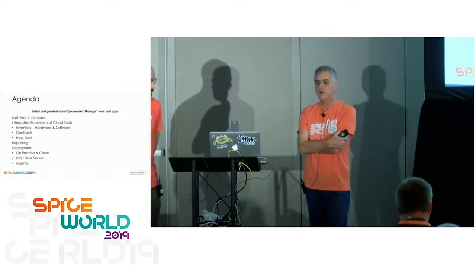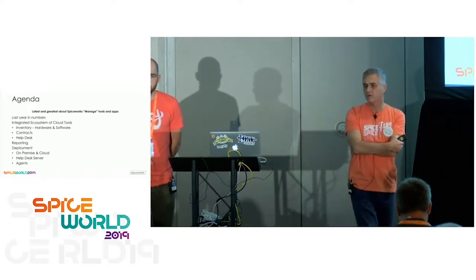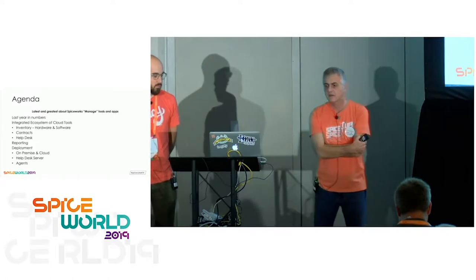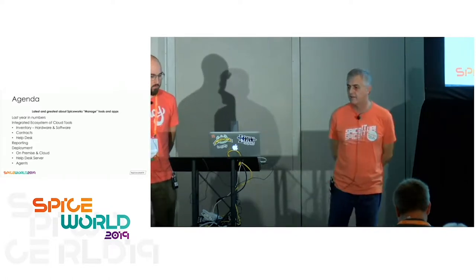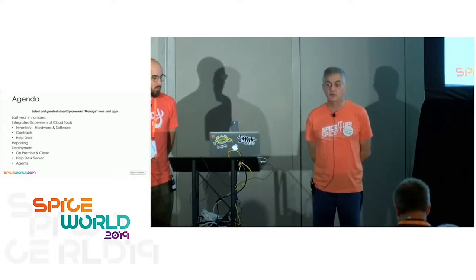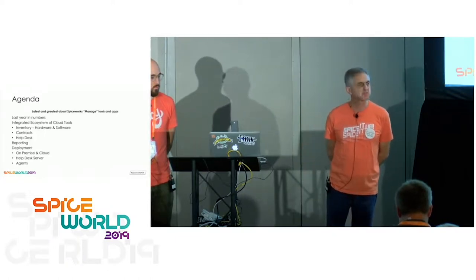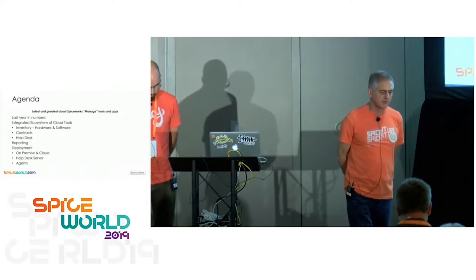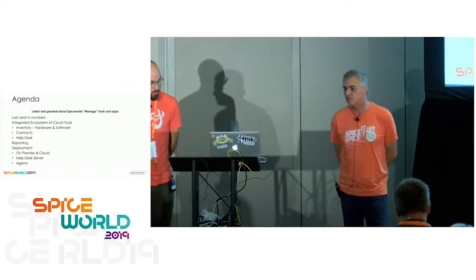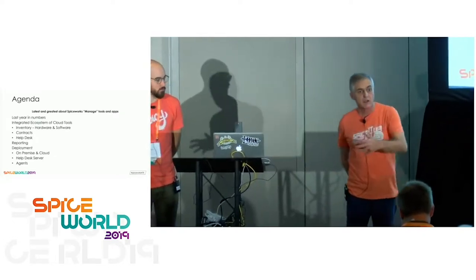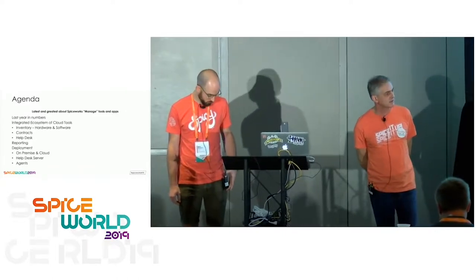Quick warm-up slide: last year in numbers — we'll skip rapidly on that. Then we'll talk about all the efforts we've made to integrate the cloud tools. We'll start with cloud tools, give you a quick demo going through the cloud inventory called Inventory Online — hardware and software inventory. Then there's the new kid on the block called Contracts, which we'll show you quickly. Then we'll cover cloud help desk briefly since not many people in the room run it. Then we'll get to reporting — that's a cloud topic. Reporting is decent on the desktop side but not as developed on the cloud side, and that's why many of you haven't made the move to cloud tools.